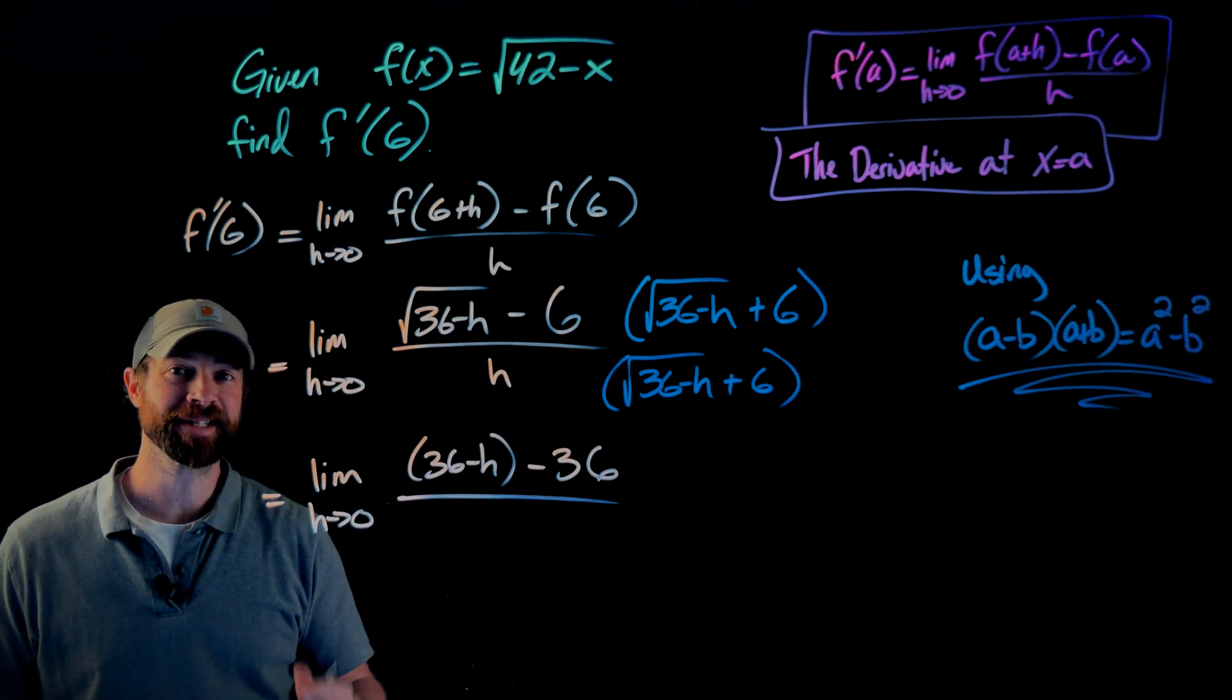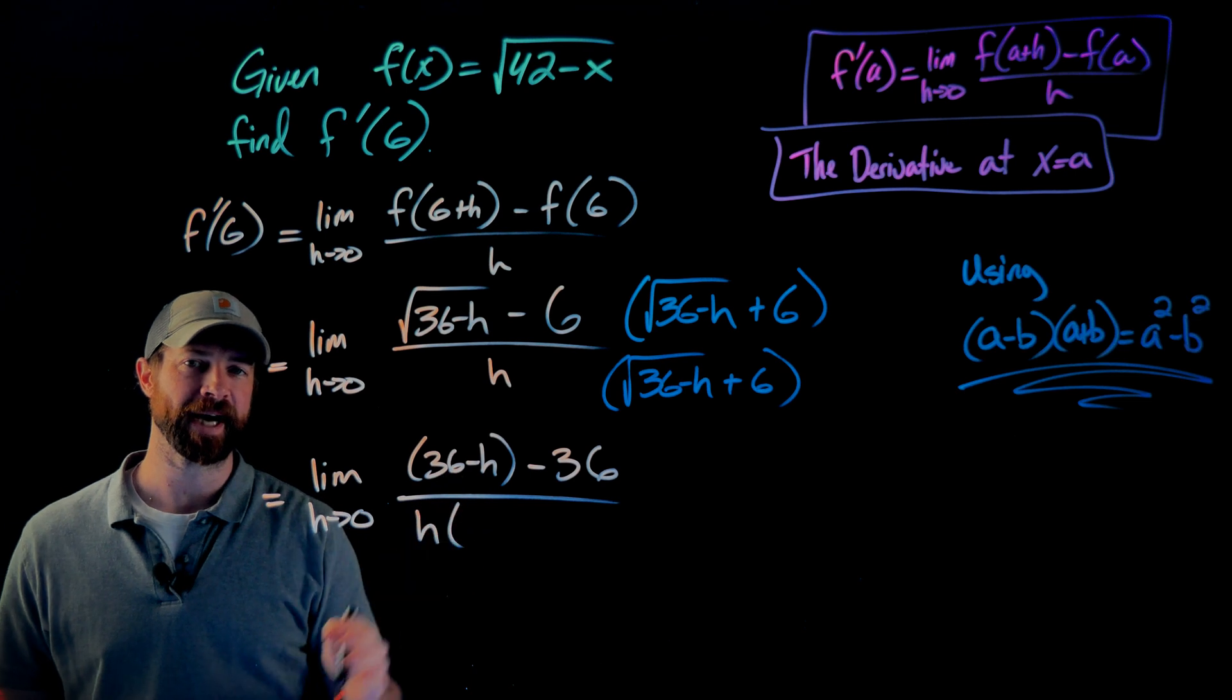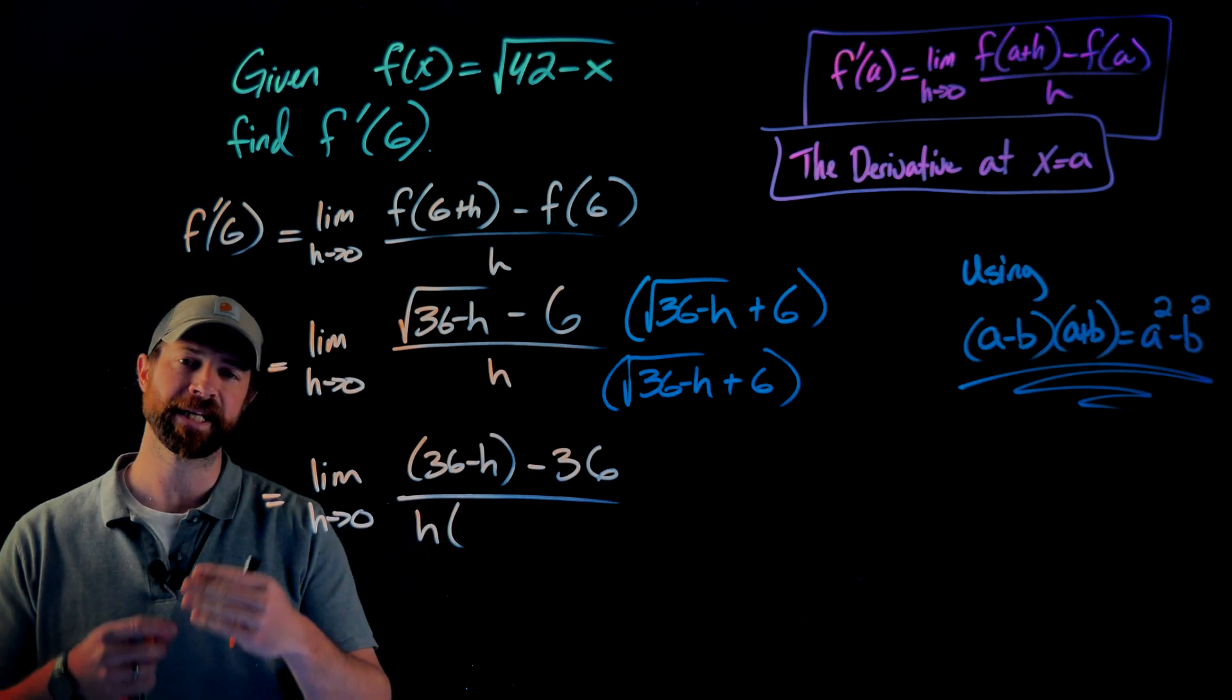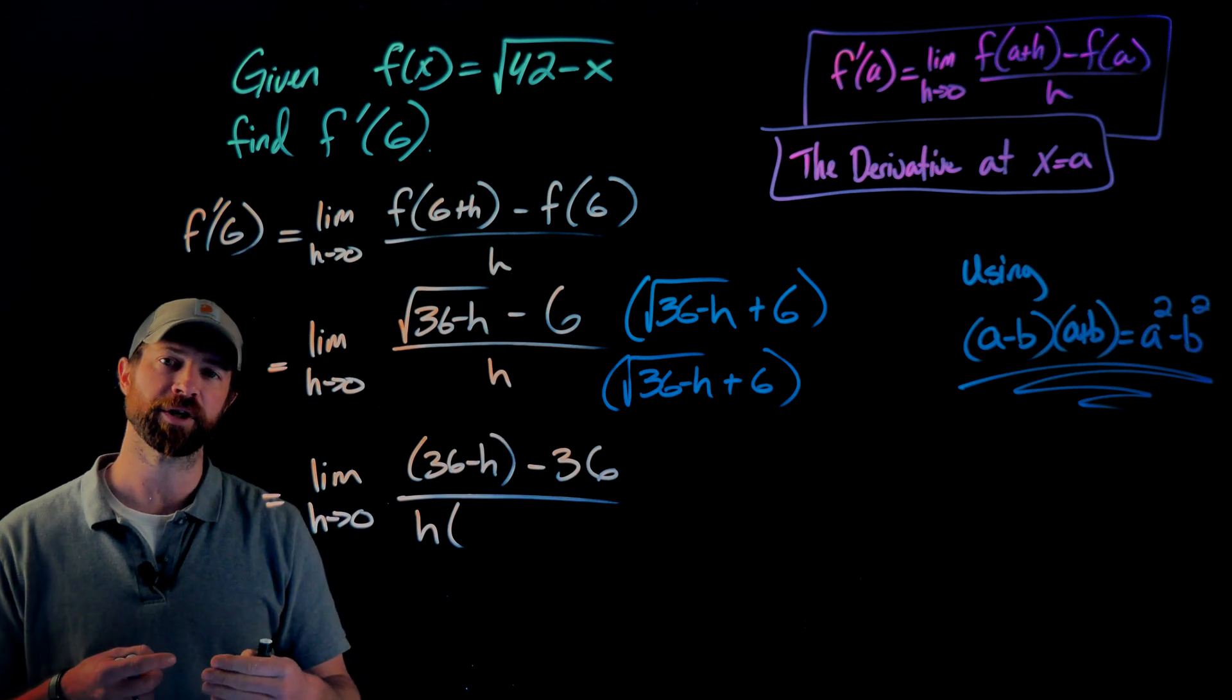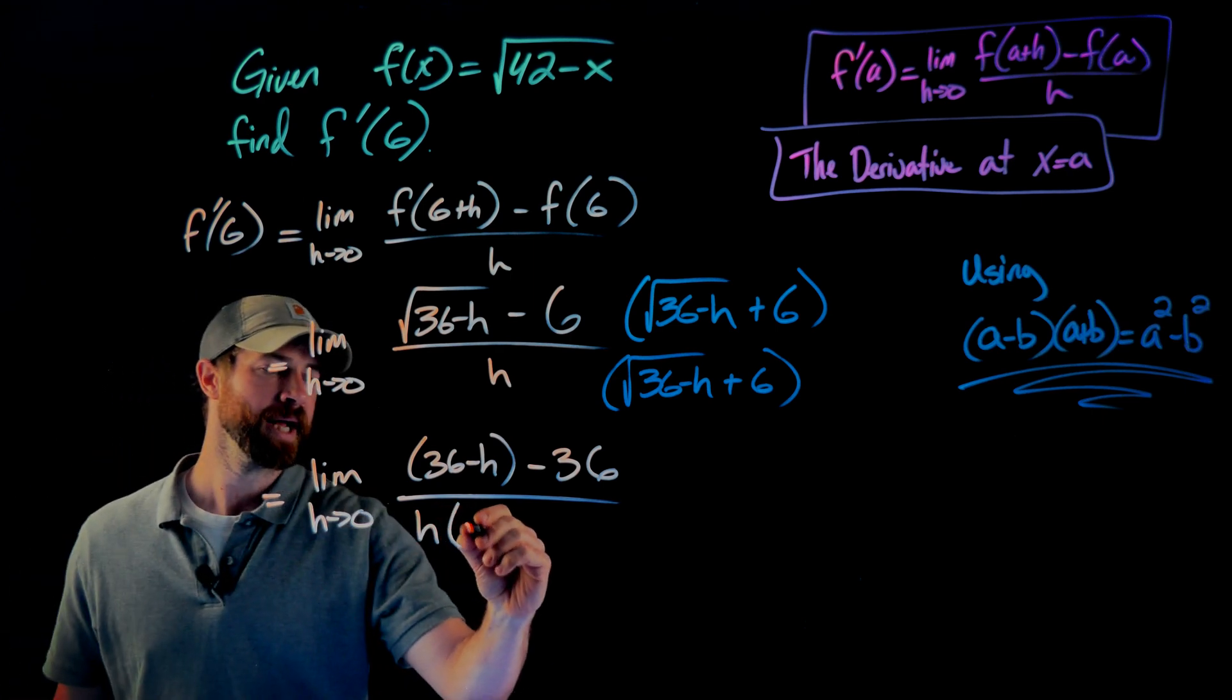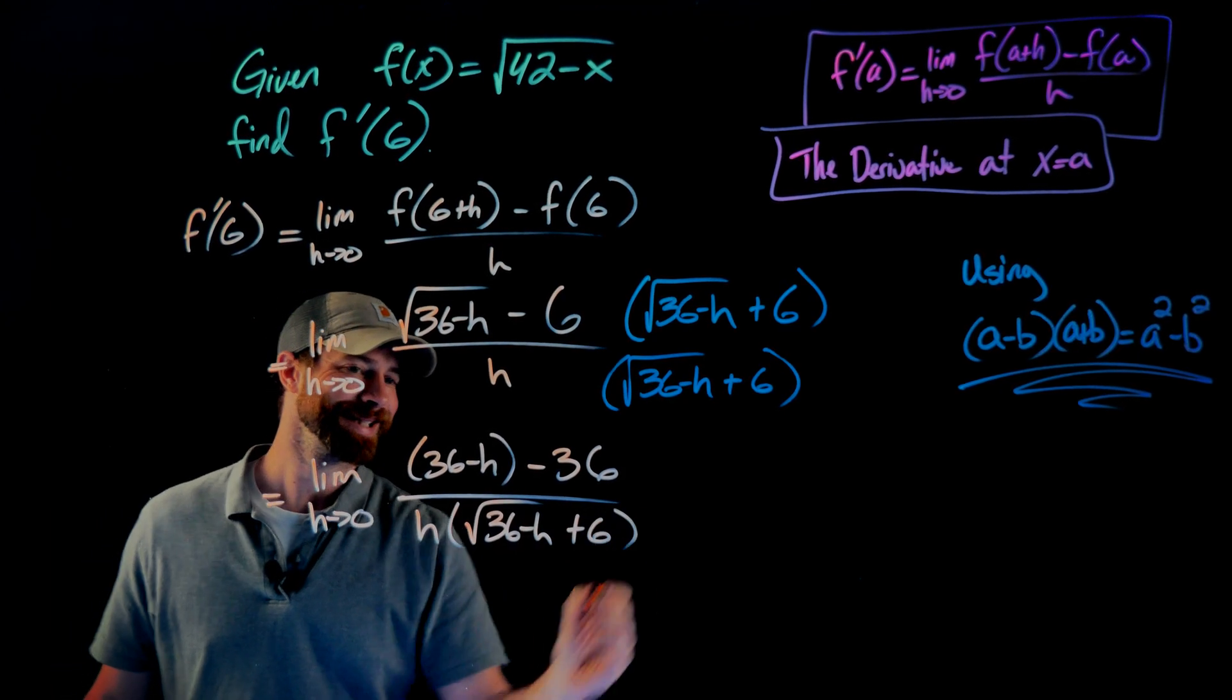Whenever you do this, the denominator won't be so nice, but I'm not going to multiply stuff out. I'm just going to leave it in its factored form. And the reason I do this is I'm looking to cancel this factor of h. This is what makes the denominator go to zero. So I'm going to leave it factored and just multiply it here by the square root of 36 minus h, plus the six.